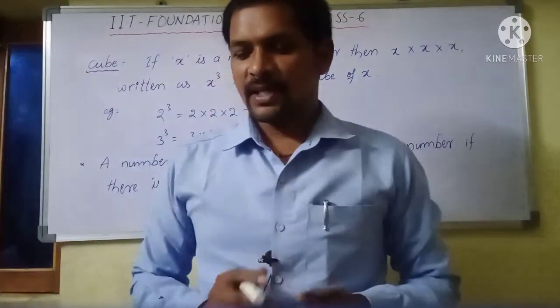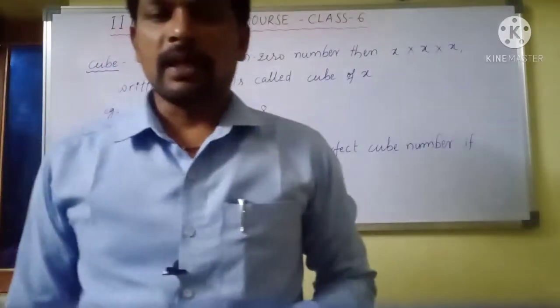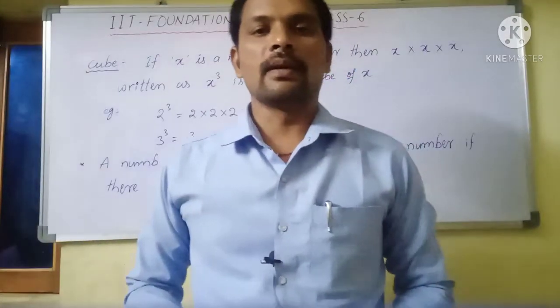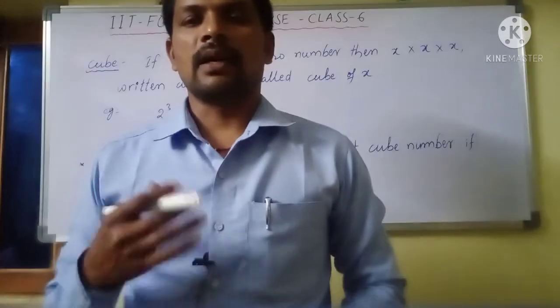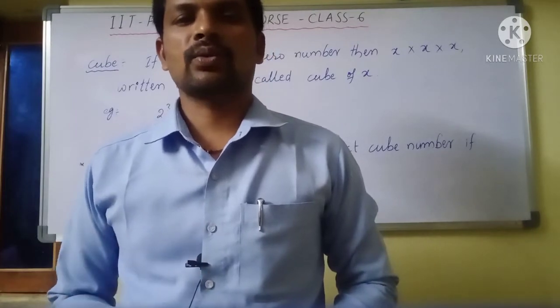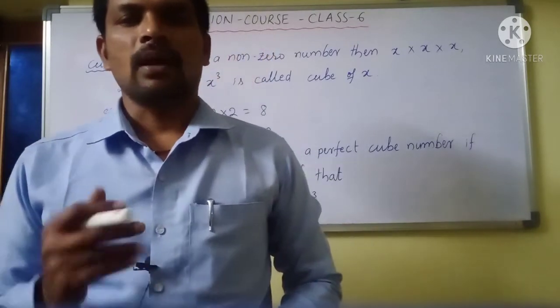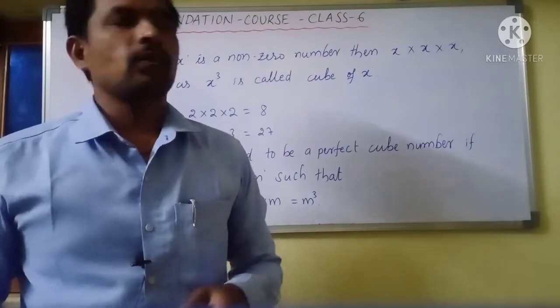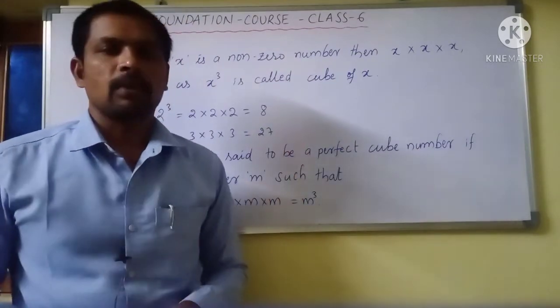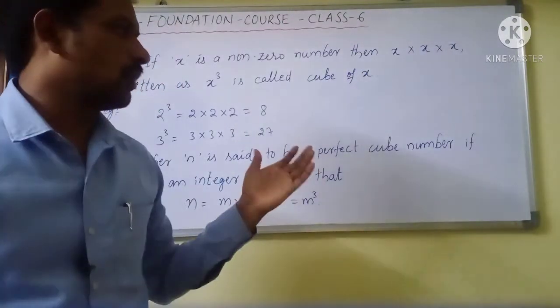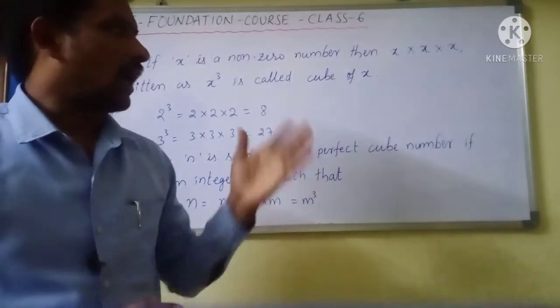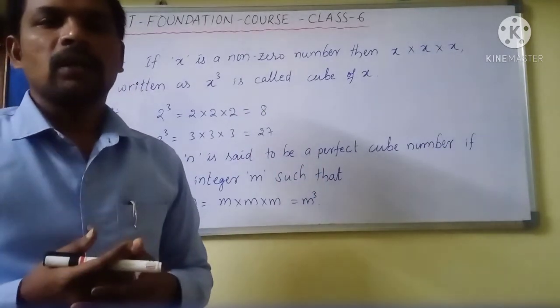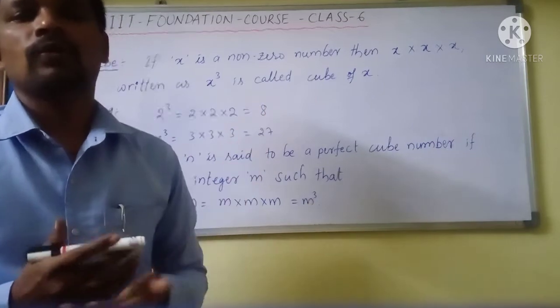Hello friends and my dear children. In the last session we completed squares, its definition, perfect square, and model problems on the squares. Today we are going to start a new concept - the definition of cube, what do you mean by perfect cube, and what are the cube values of 1 to 15 numbers.